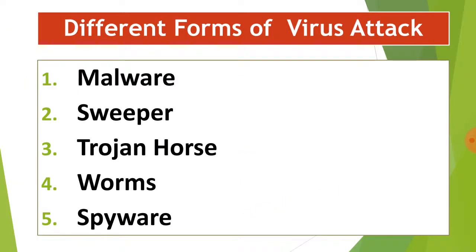In part second of this chapter we are going to learn about different forms of virus attacks. These are the forms by which computer viruses affect our computer: the first one is malware, second is sweeper, third is trojan horse, fourth is worms, and fifth is spyware. These are all types or different forms of viruses which attack our system.